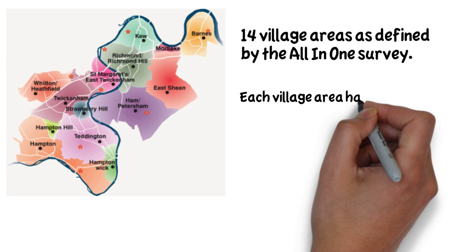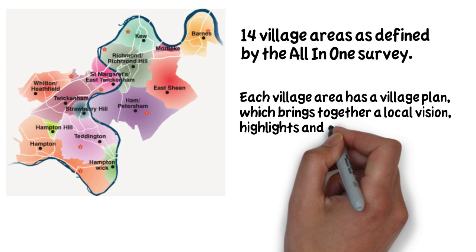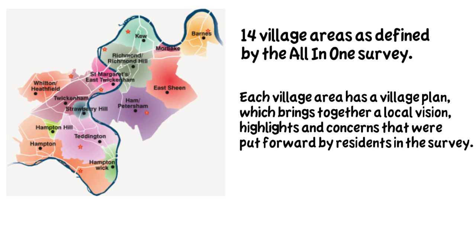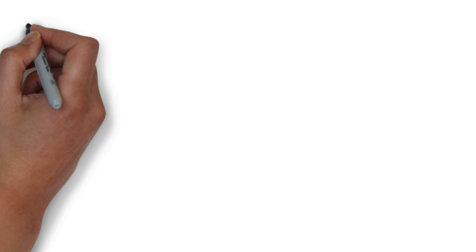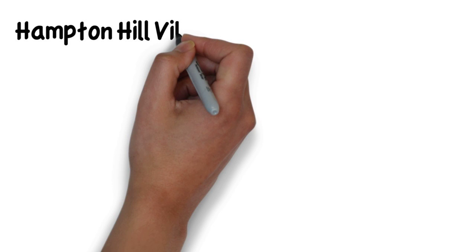Each village area has a unique plan which brings together a local vision, what people cherish, and local concerns. The village plan also coordinates ideas and responses to the concerns that have been raised. Let's take a closer look at the village plan for Hampton Hill.